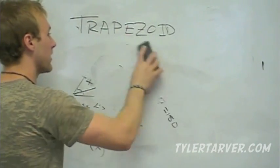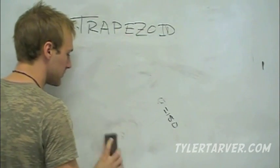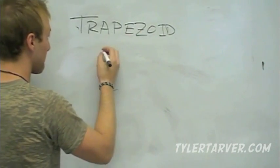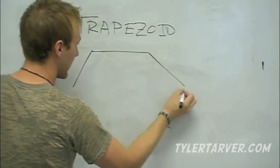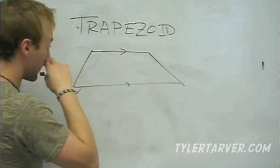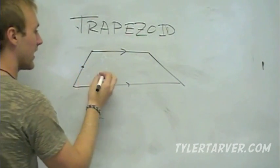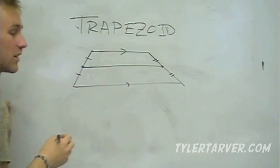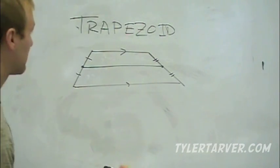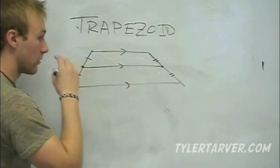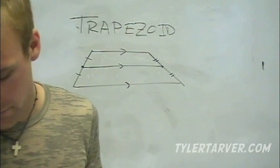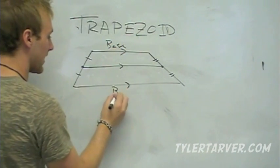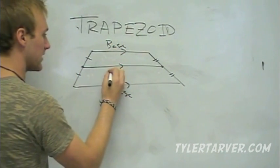Last thing — still with trapezoids. It's called the mid-segment of a trapezoid. Just like the mid-segment of a triangle goes from the midpoint of one side to the midpoint of another, in a trapezoid it goes from the midpoint of one leg to the midpoint of the other leg. It's parallel to the two bases.